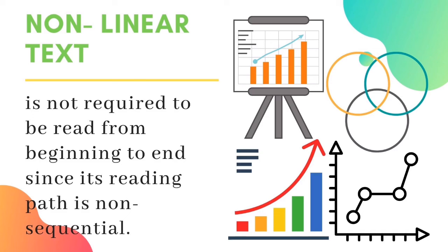A non-linear text, on the other hand, is not required to be read from beginning to end since its reading path is non-sequential. This only means that the reader can choose his own reading path. Non-linear text is the opposite of linear text. As its name suggests, it is non-linear and non-sequential. The readers do not have to go through the text in a sequential manner in order to make sense of the text. This type of text has many reading paths since it is the readers who decide the sequence of reading and not the author.